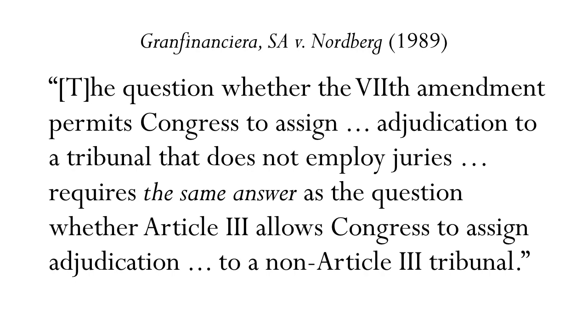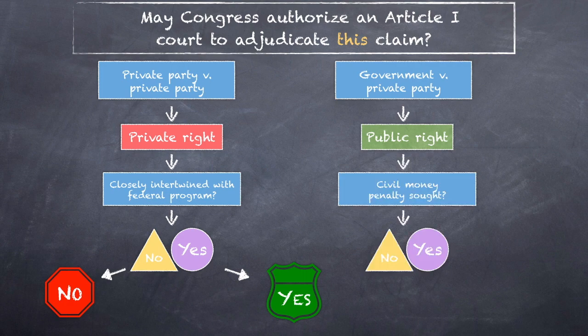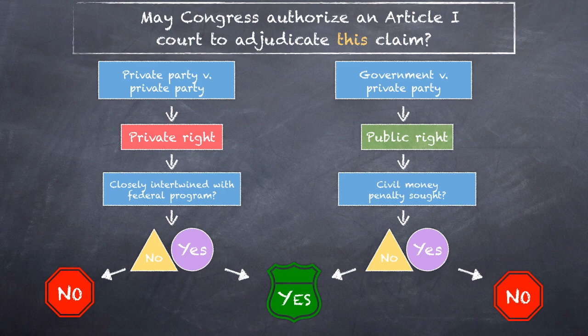We should look again at our flow chart. Even in a public right matter, a party may have a personal right to an Article III judge and even a jury. Most obviously, this is true in criminal cases, but it is also true where the government seeks civil money damages. So we must ask: is a civil money penalty sought? If the answer is yes, a civil money penalty is sought, then our final answer is no. If a civil money penalty is not sought, then our final answer is yes — Congress may endow an Article I tribunal with subject matter jurisdiction. Not easy to synthesize? Amen to Justice O'Connor.